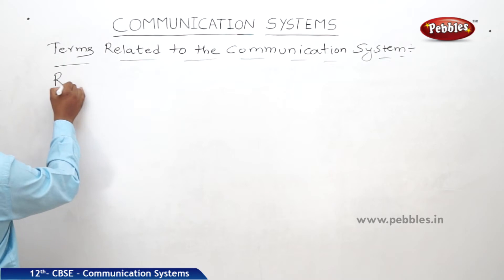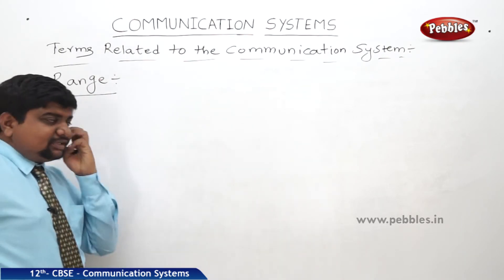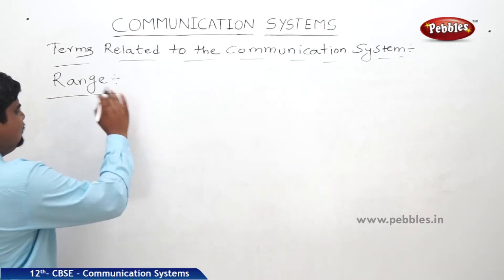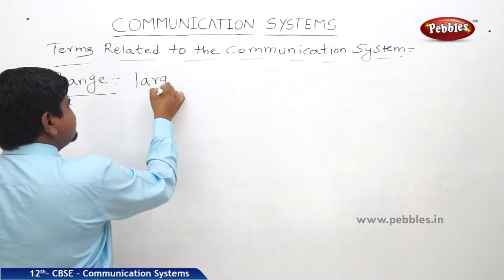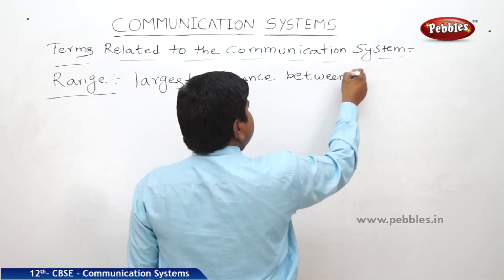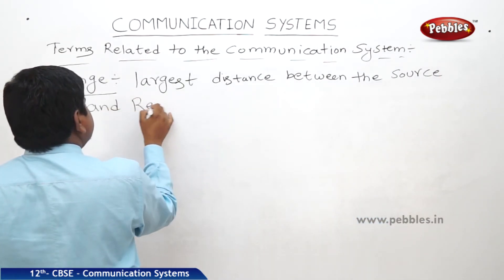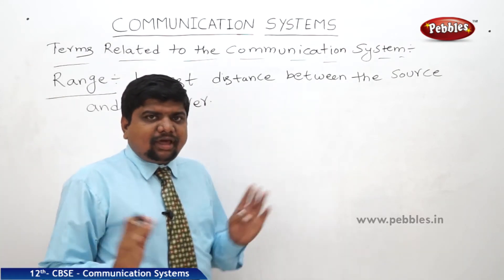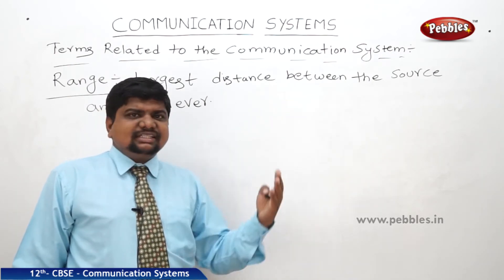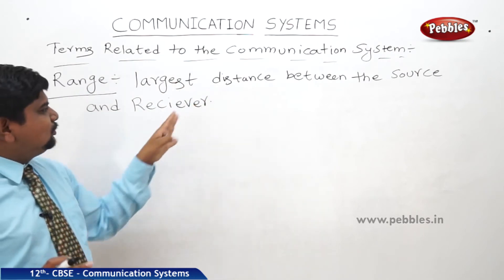Now we are going to discuss about the range. This is also one of the important terms related to the communication system. What is the meaning of range? Starting value to ending value. In mathematics if you find the range of an arithmetic or progression series, the range is 0 to infinity. In this communication system the range is defined as the largest distance between the source and receiver. For example, any FM channel has a range — maybe within the limits of a town. After crossing that limit it is very difficult to hear the sound or sense the signal. So the range was over. The largest distance from source to receiver is called range.